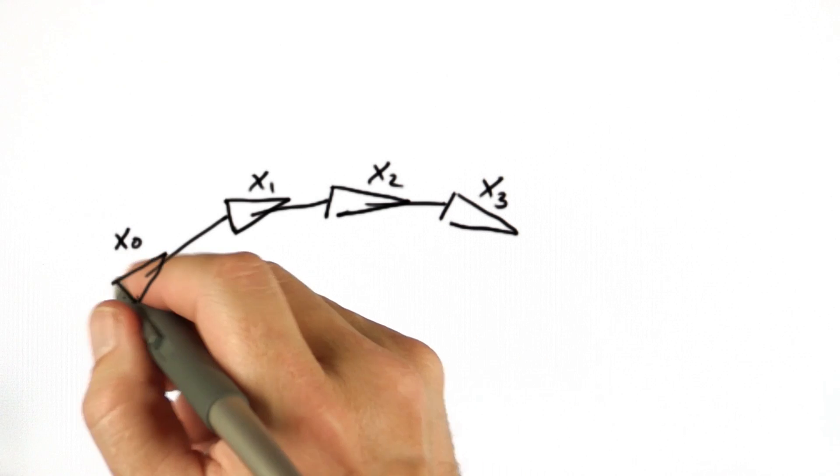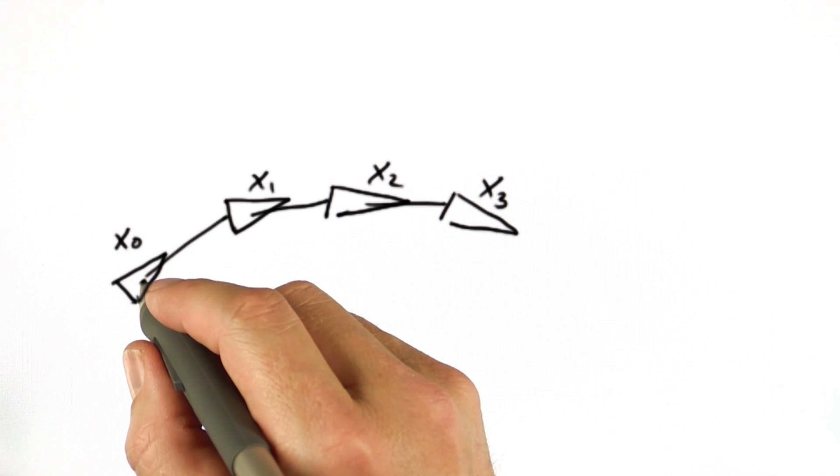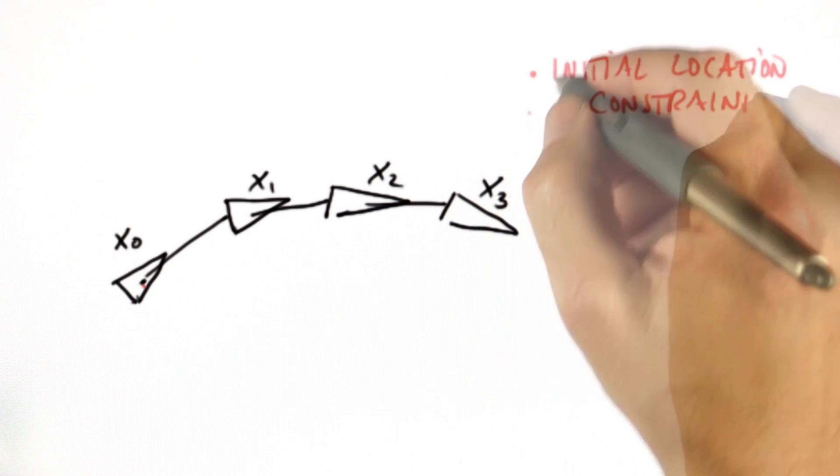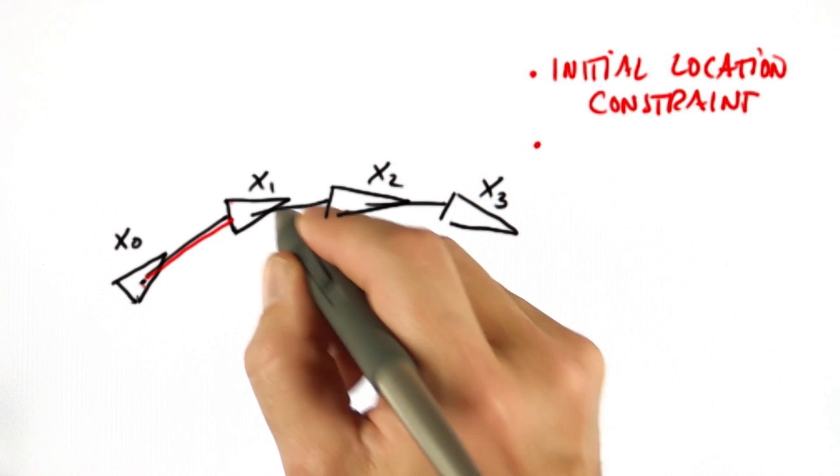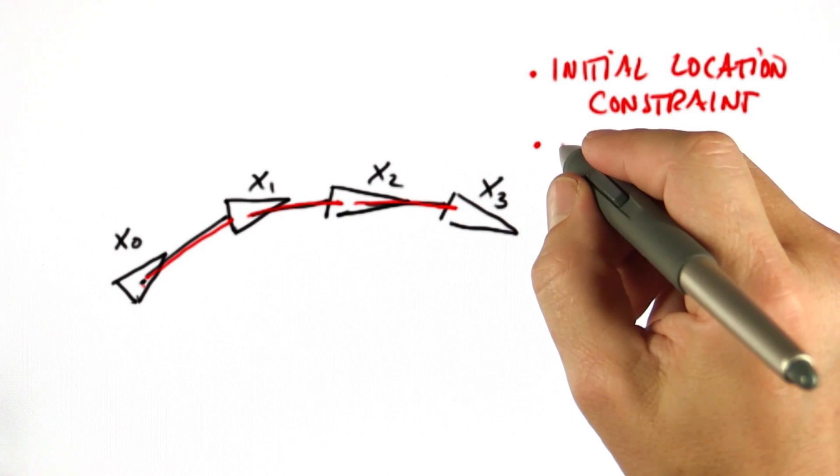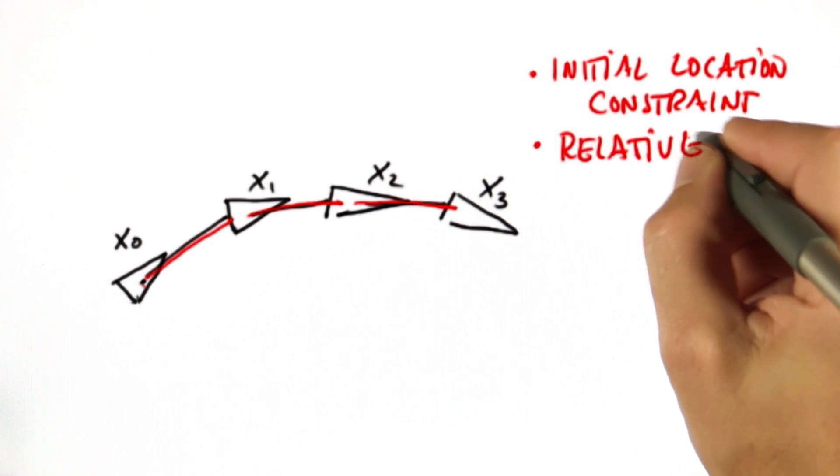Then what GraphSLAM collects is the initial location, which is 0, 0, 0 usually. Although here it looks a little bit different. And then, really importantly, lots of relative constraints that relate each robot pose to the previous robot pose. We call them relative motion constraints.